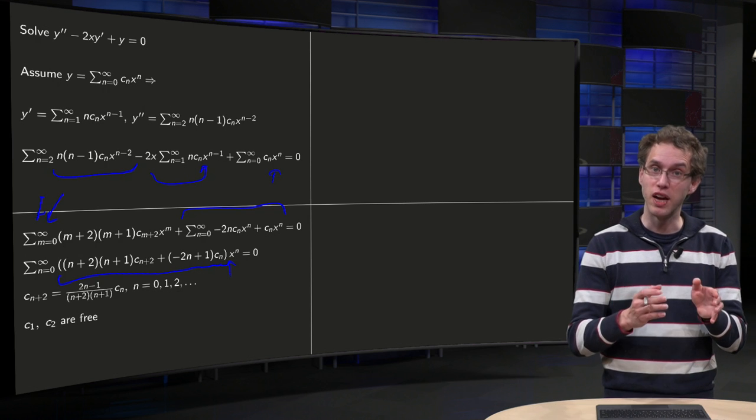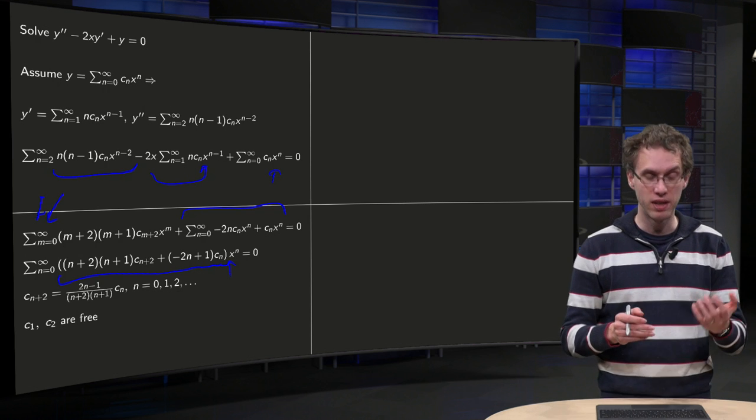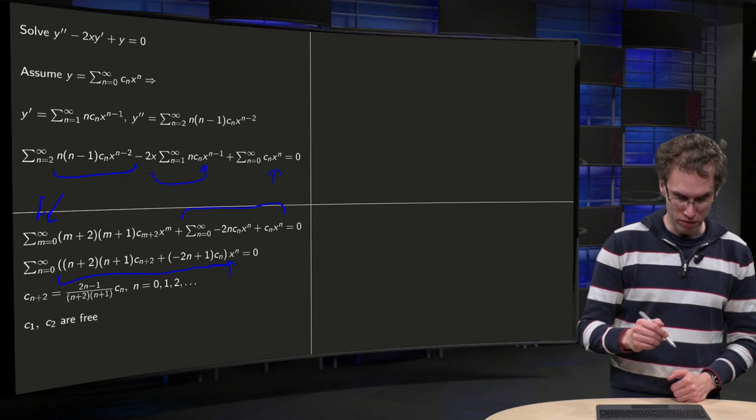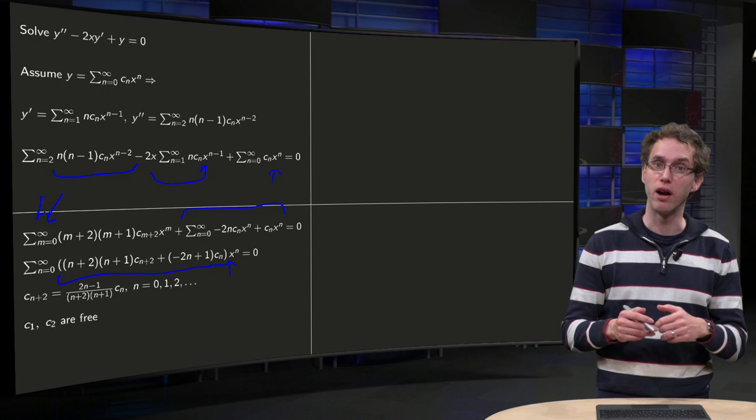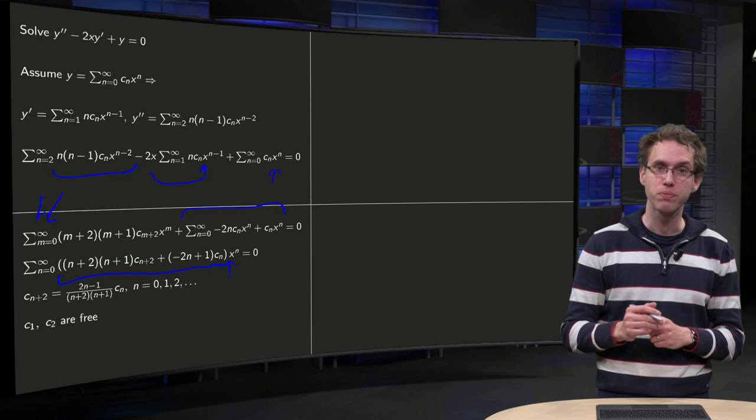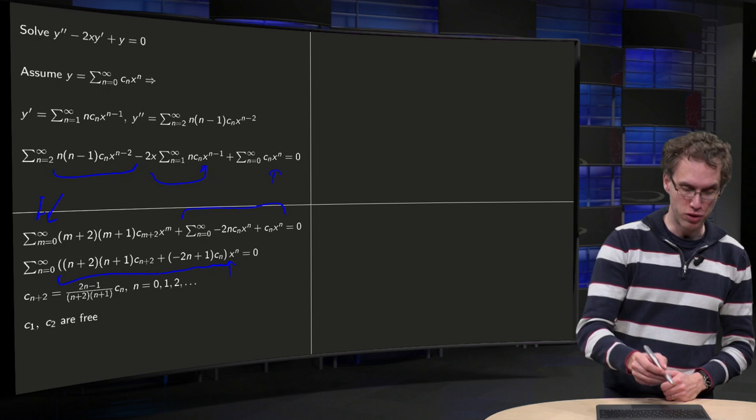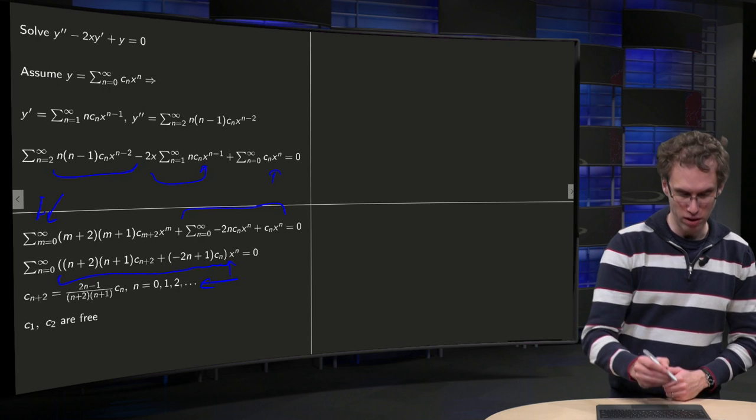we have a relation between c(n+2) and cn, which means again that the first two coefficients c1 and c2 or c0 and c1 can be chosen freely, and then all the others are determined by this relation over there.